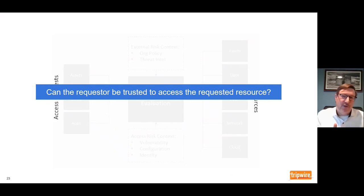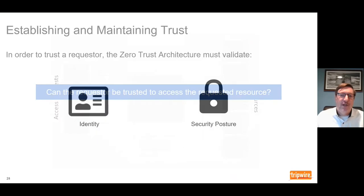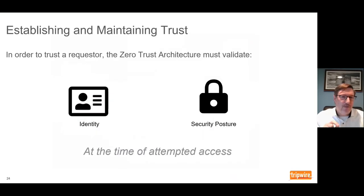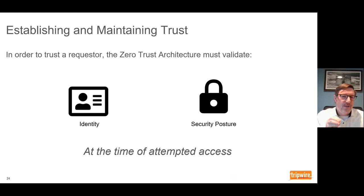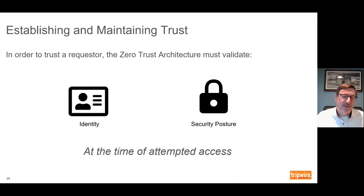Stepping into the operations of zero trust — the requesters coming in and requesting access — there are really two primary ways to establish trust in that process. One is identity, and the other is security posture. Identity is delivered by an identity provider — there are lots of great identity providers out there. Security posture is a little more complex, because there isn't as much a single industry built around security posture as there is around identity. So I want to talk about what it takes to establish or evaluate security posture in a zero trust architecture.